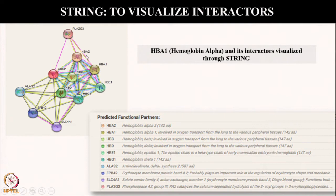Now moving on, we will explore another tool called STRING. STRING is like a network — it means a visualization of all the interacting partners of a particular molecule. In this case, it is hemoglobin alpha. Let's now go and see how STRING can help us in identifying the interacting partners of hemoglobin alpha.